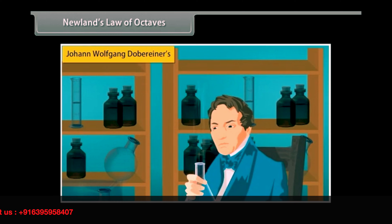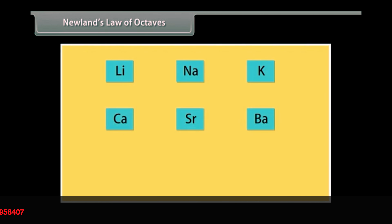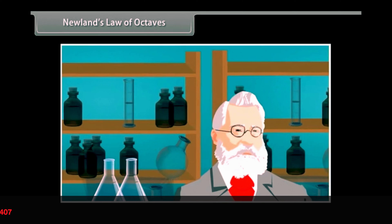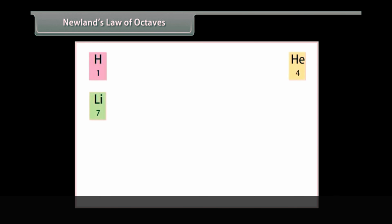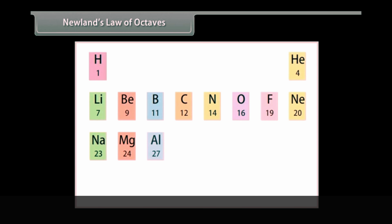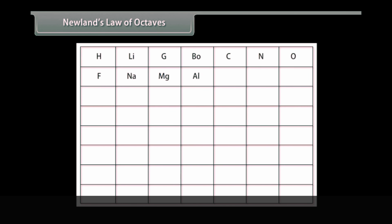Dobereiner's research simultaneously encouraged other scientists to start classifying elements. The triads were not useful as they could classify only three elements at a time. In 1864, John Alexander Newland, an English chemist, discovered that when elements are arranged in increasing order of their atomic masses, every eighth element had properties similar to the first element. This is called the Law of Octaves. However, all elements could be arranged in this order only till calcium, even though there were more than 60 elements available at that time.